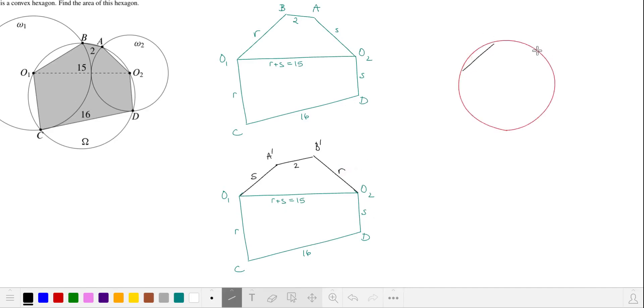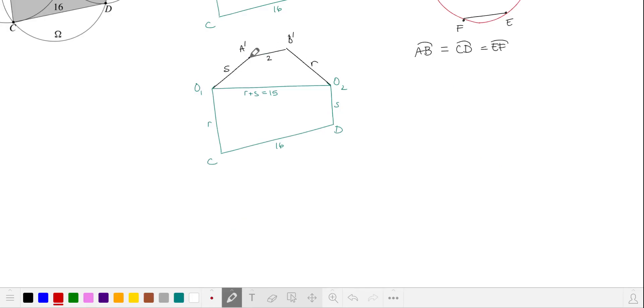Now we're going to make use of the fact that if you have congruent chords on a circle, they're going to cut off arcs that are also congruent. So for example, if we look at the arc of the circle that circumscribes this hexagon, if we look at the arc from A prime all the way to D, that's going to be cut off by three chords of length 2, R and S. The sum of these three arcs adds up to the arc from A prime D. The arc from B prime to C is also cut off by chords of length R, S and 2. So the inscribed angles A prime, C, D and B prime, D, C are congruent.